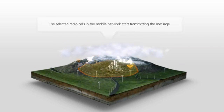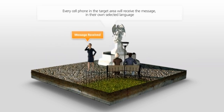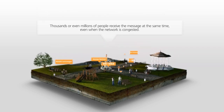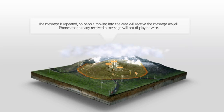The selected radio cells in the mobile network start transmitting the message. Every cell phone in the target area will receive the message in their own selected language. Thousands or even millions of people receive the message at the same time, even when the network is congested. The message is repeated, so people moving into the area will receive the message also. Phones that already received the message will not display it twice.